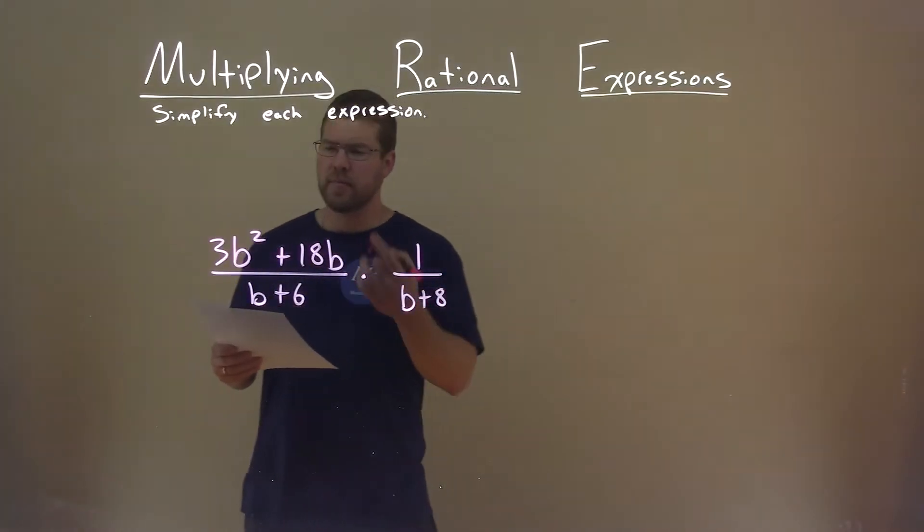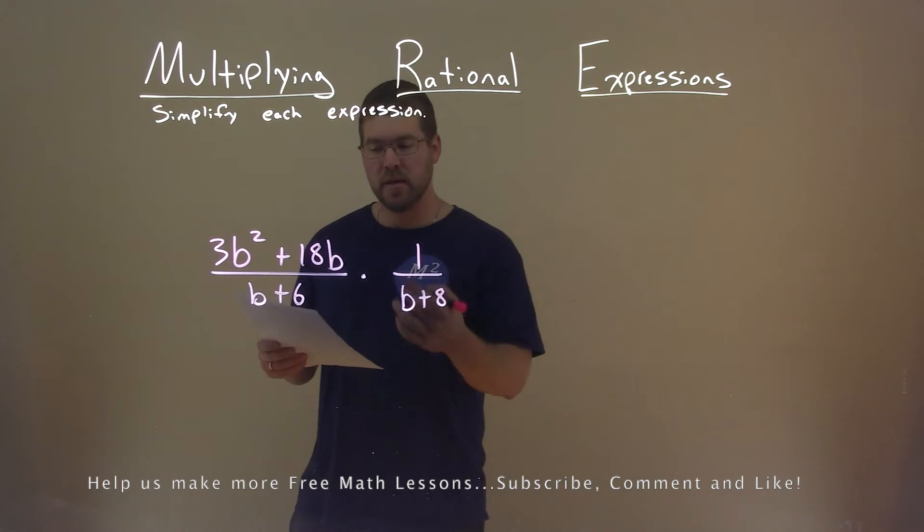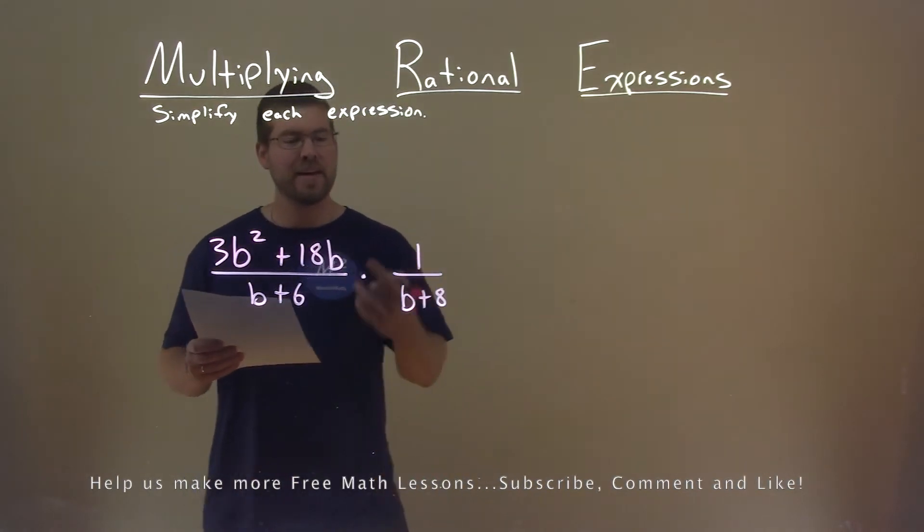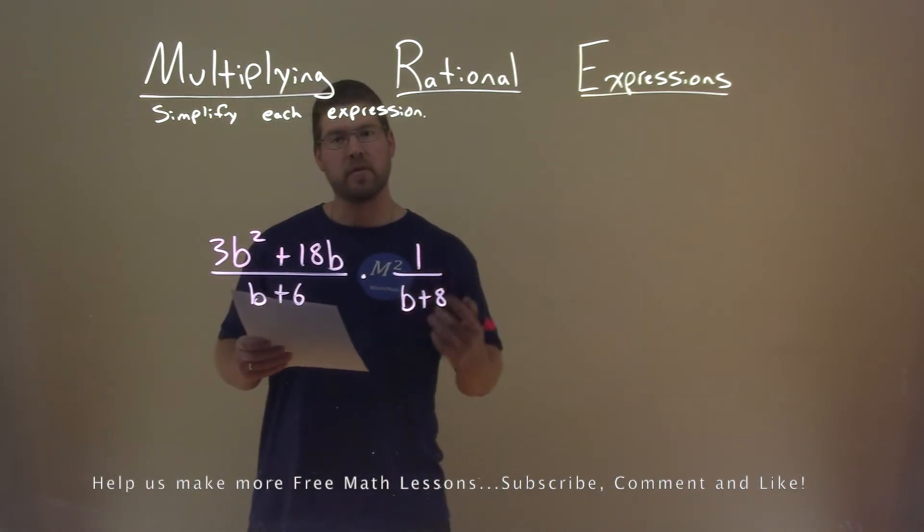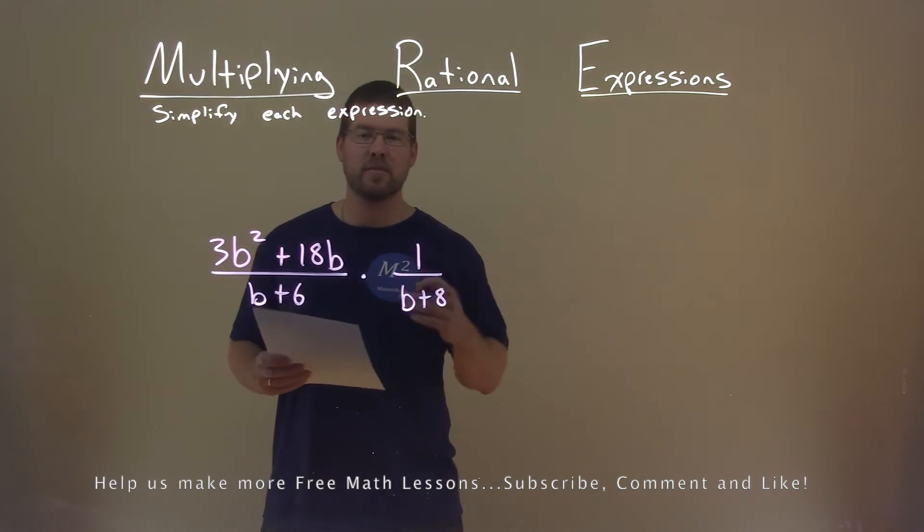We're given this problem right here: 3b squared plus 18b divided by b plus 6 times 1 over b plus 8, and we want to simplify this expression.